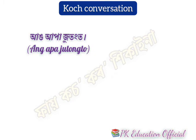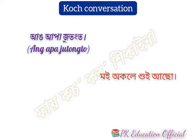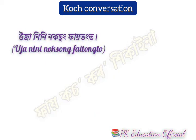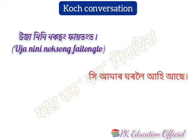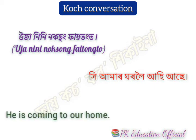In Assamese: 'Moi akale huyasu.' In English: I am sleeping alone. Next sentence in Assamese: 'He amar gharoli ayayashe.' In English: He is coming to our home.